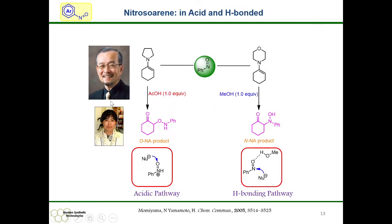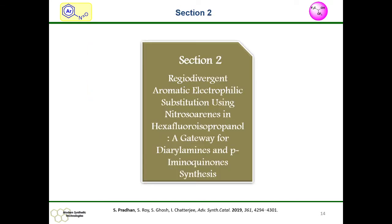Checking the literature, we found that nitroso-arene in acidic medium forms the C-O bond, and in a hydrogen bonding medium it forms the C-N bond. As discussed, HFIP has the property of strong hydrogen bond donating as well as Brønsted acid ability. So we wished to tune the reactivity — formation of the C-O bond as well as the C-N bond — in the presence of HFIP. In section 2, I will discuss the regiodivergent aromatic electrophilic substitution reaction using nitroso-arene in HFIP for the formation of diarylmethanes as well as para-aminoquinone.